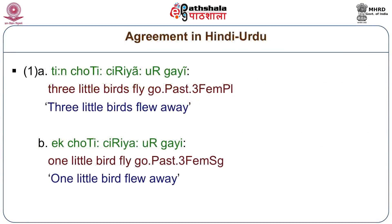Let us compare agreement in an agreement language like Hindi-Urdu. Teen choti chediyaan urgai — three little birds flew away — where urgai is the verb agreeing with the subject choti chediyaan, and reflecting the fact that the subject is third person, feminine, plural.